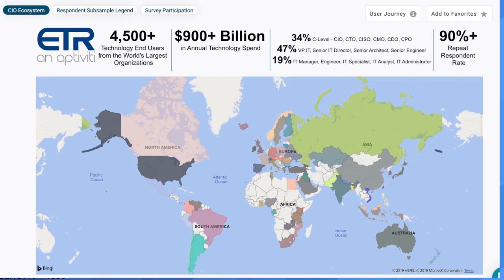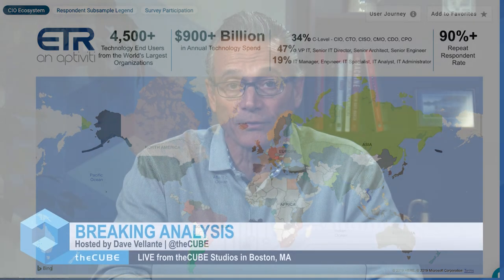There's no incentive for them to exaggerate their spending intentions — it's not like the old days of computer pubs where if you spent over a threshold you'd get a free magazine. So this is legit spending data, spending patterns that ETR vets with historical data. They also pay close attention to the income statements of public companies and tune their data and forecasts accordingly. The data is global and comprises a very strong mix of large organizations across virtually all industries and geographies — North America heavy, but with representation all over the world. These guys have been at it for 10 years and they're serious data geeks.